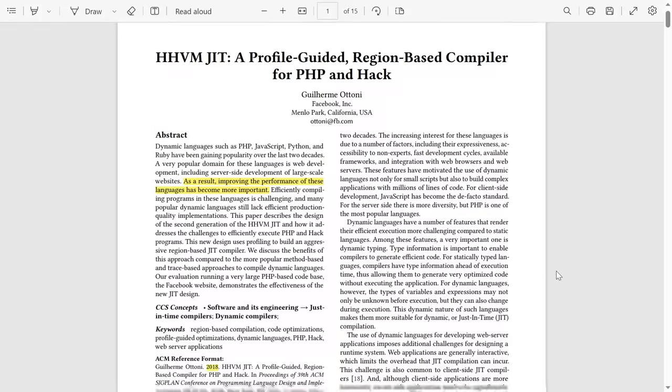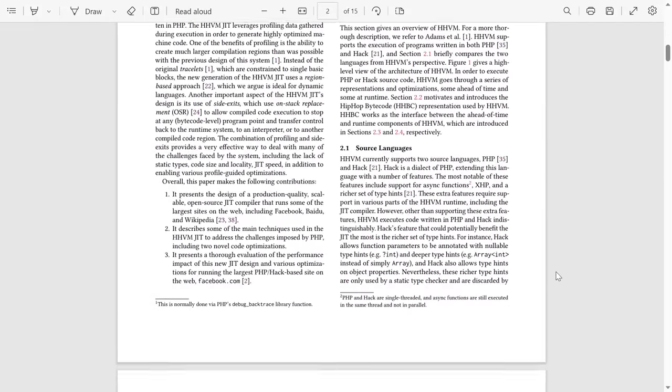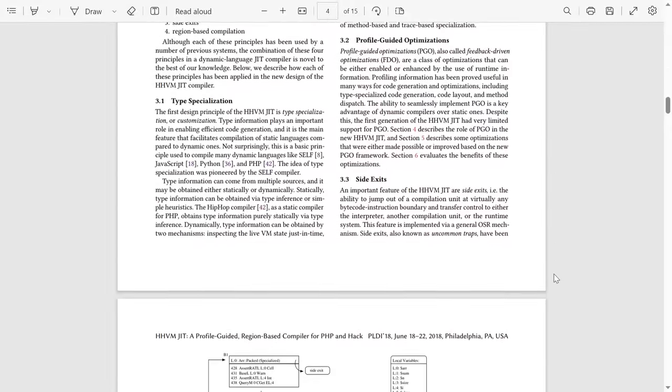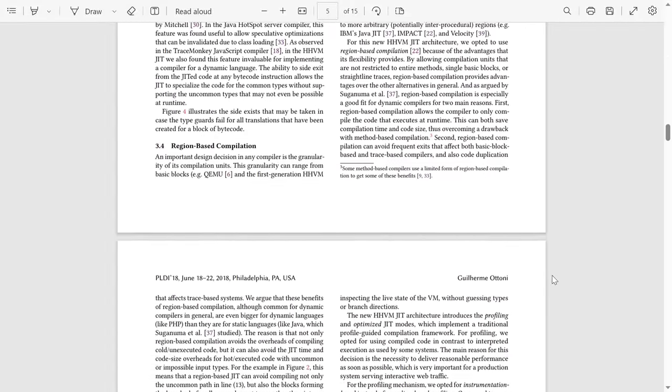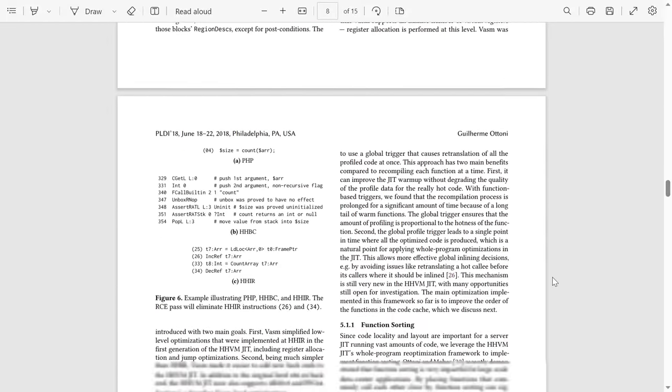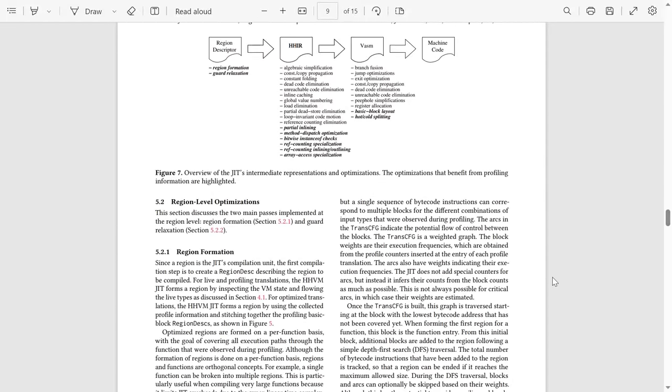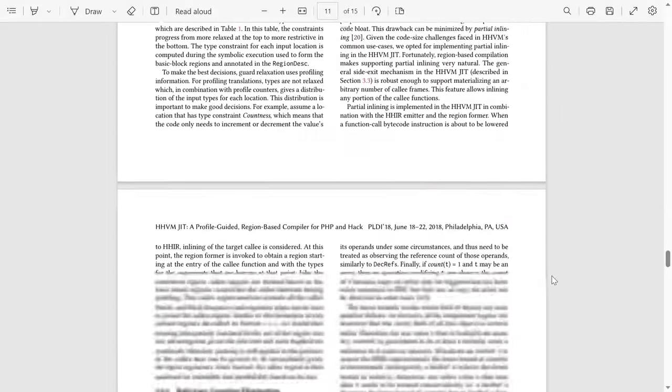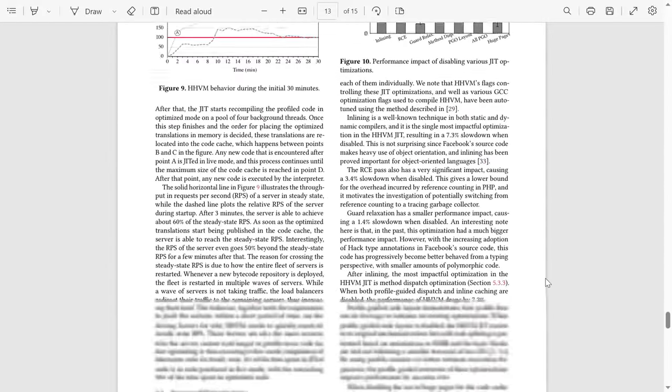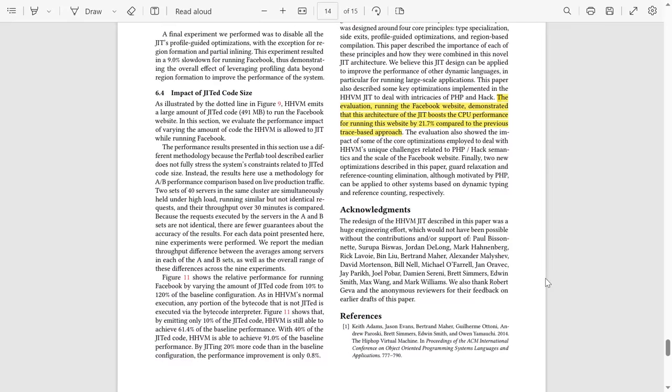In 2018, Facebook published a paper describing how improving the performance of PHP and Hack became a priority for them, and they had to create increasingly more complicated compilers to get their code to run faster. The paper describes a number of techniques employed in the compiler to work around the inherent limitations of these languages that make it difficult for compilers to generate fast code. How much of a performance increase did they get? 21.7%, a percentage which took a, quote, huge engineering effort to achieve.